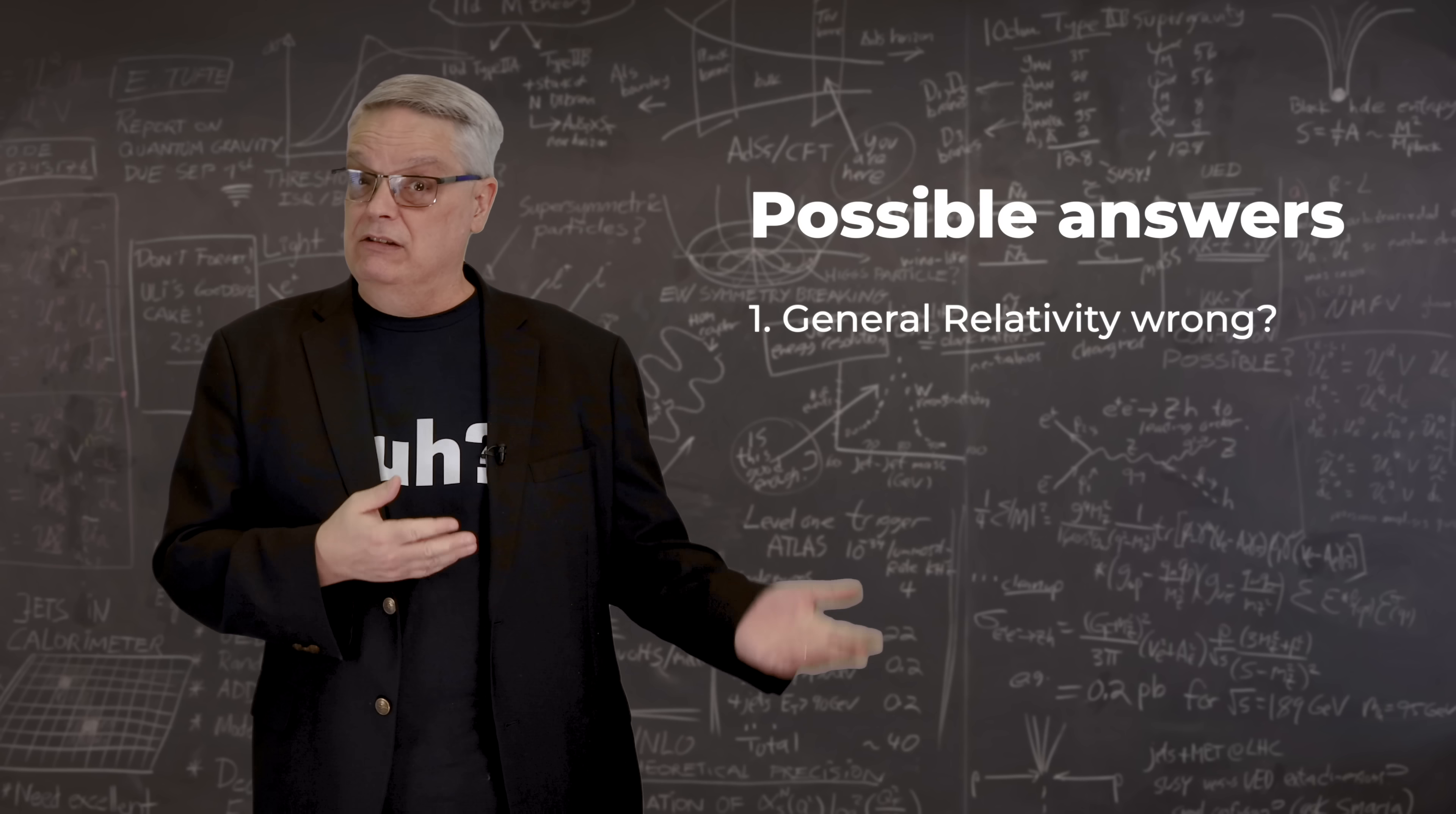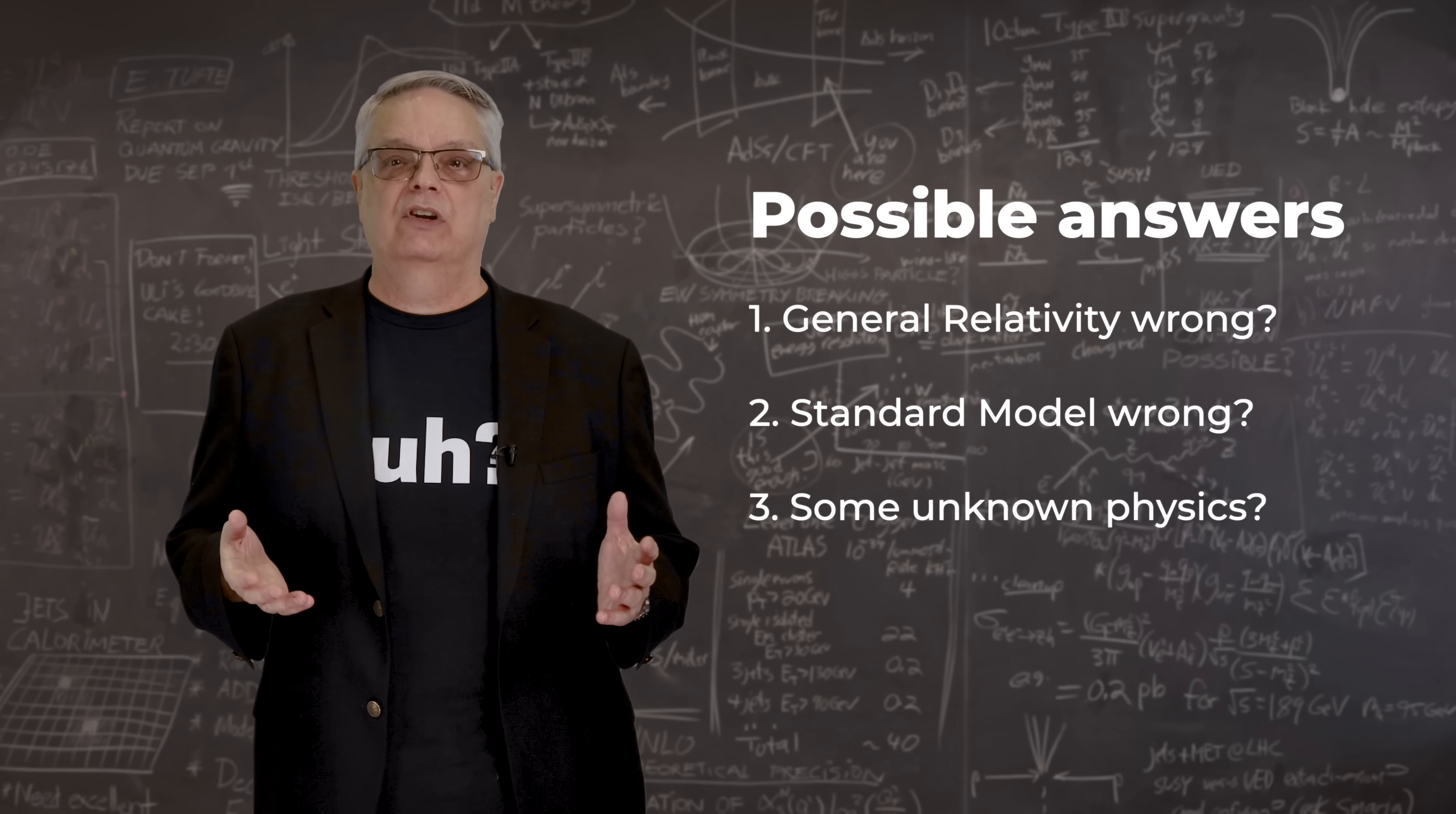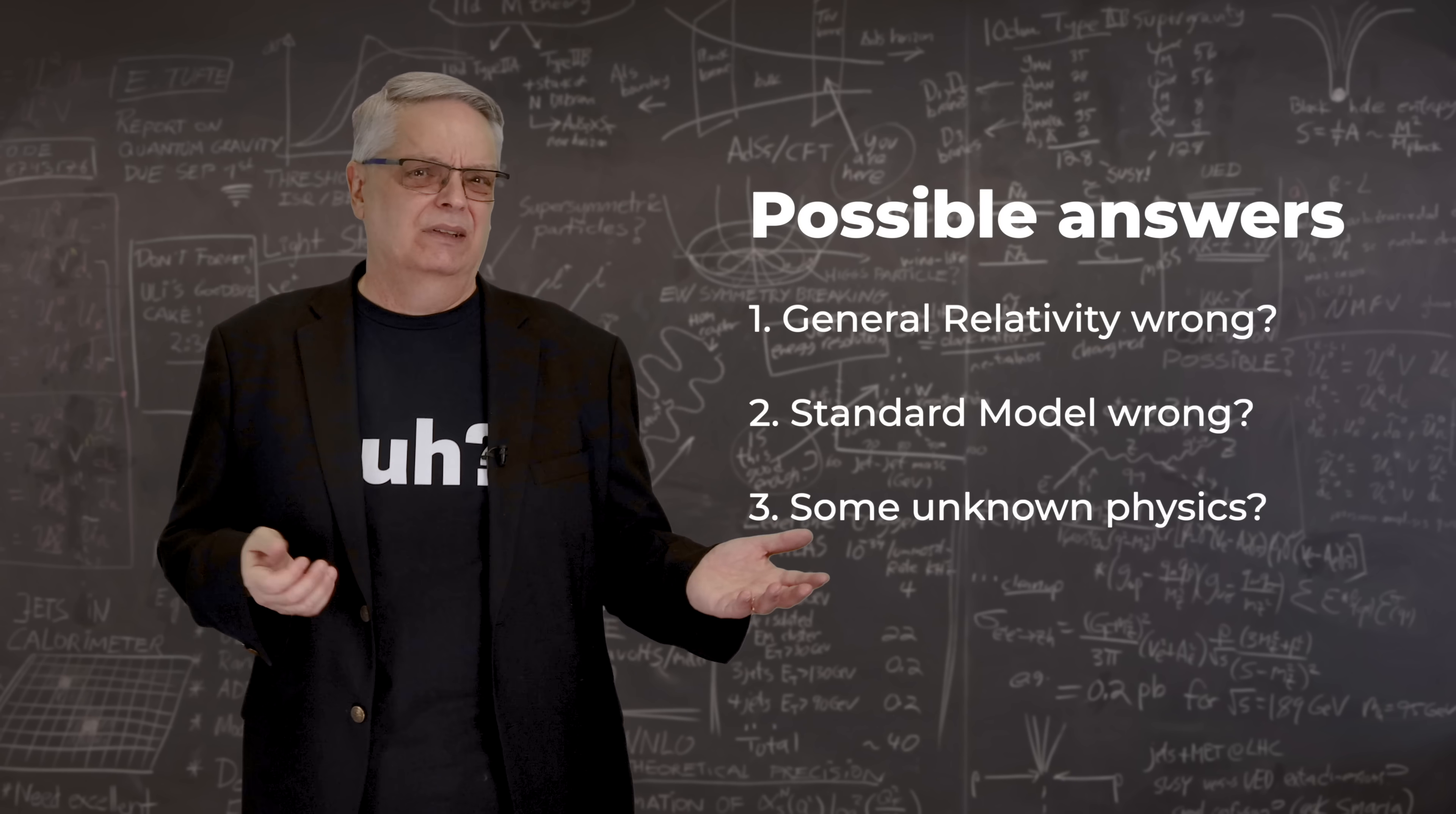What could be causing the disagreement? Well, it could be that we don't understand gravity. It could be that we don't understand the quantum world. Or it could be that there is some sort of physical phenomena that we haven't discovered that somehow cancels out that huge number from the quantum calculation. Which one is it?